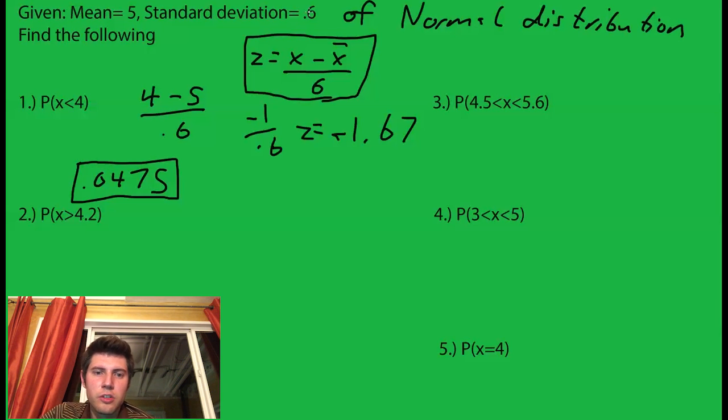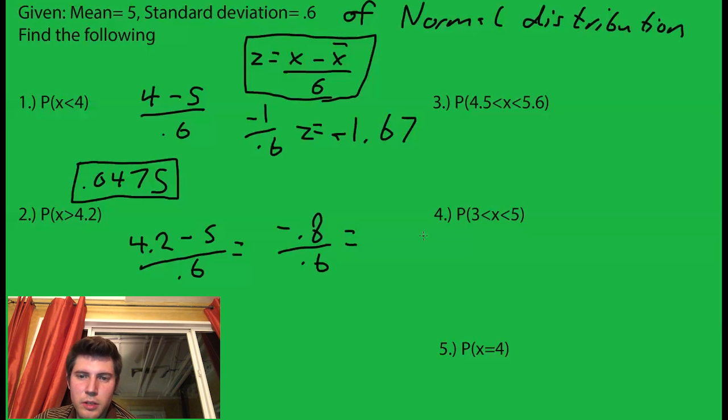If you guys want to pause it for a second, try the rest of these. So 4.2, same thing: 4.2 minus 5 over 0.6 equals negative 0.8 over 0.6, which is equal to negative 1.33.